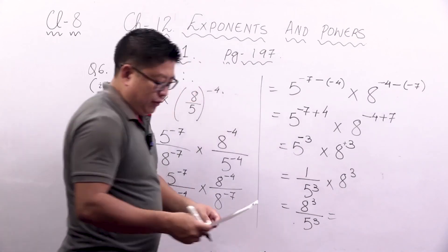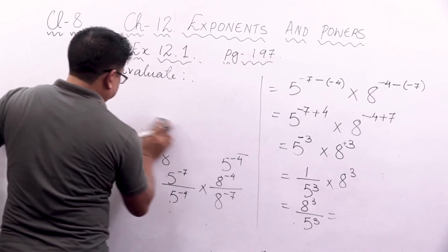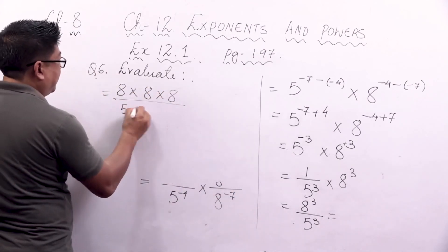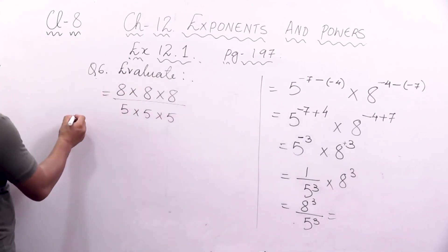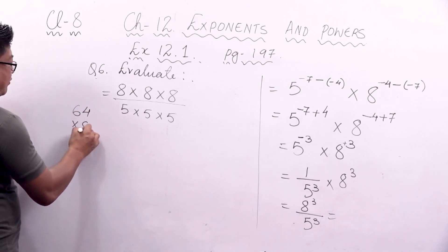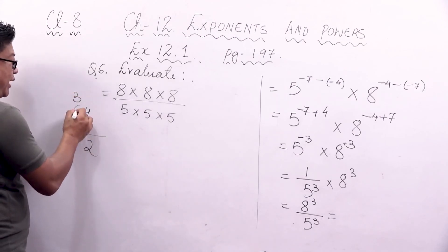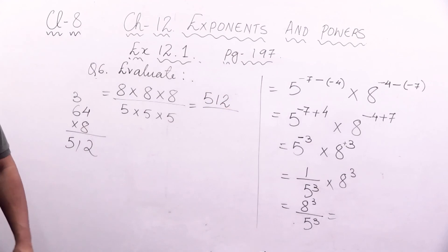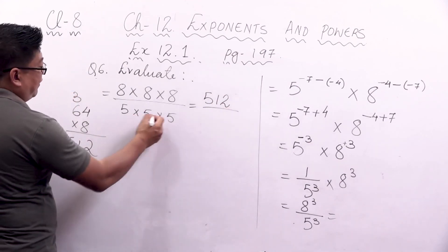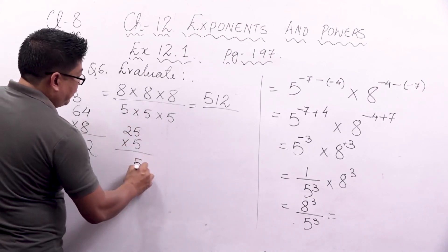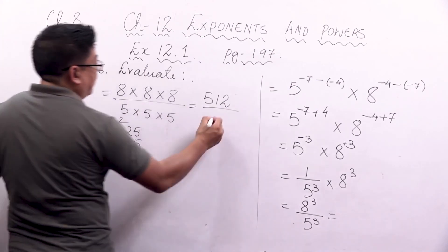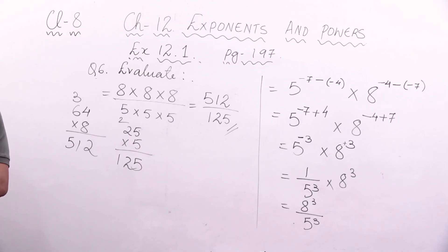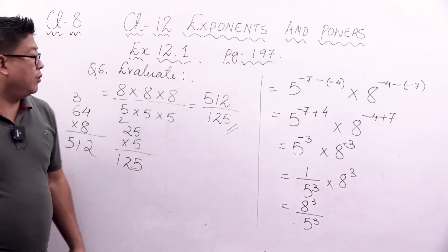Now, 8 to the power 3 means 8 into 8 into 8, and 5 to the power 3 means 5 into 5 into 5. 8 into 8 is 64, and 64 into 8 gives 512. For 5 into 5 is 25, and 25 into 5 gives 125. So the final answer for this question is 512 by 125.